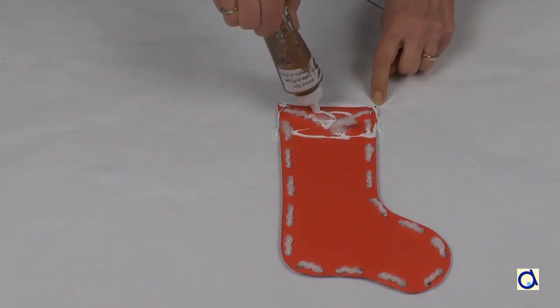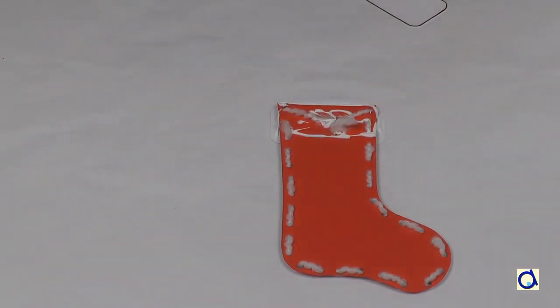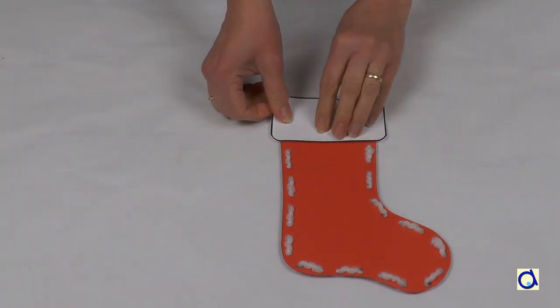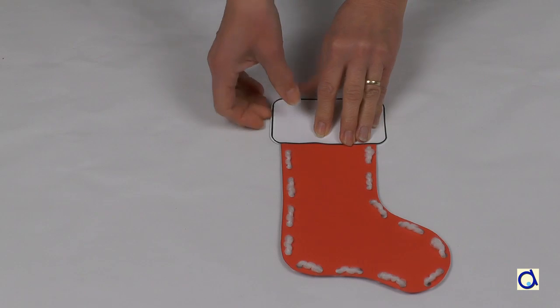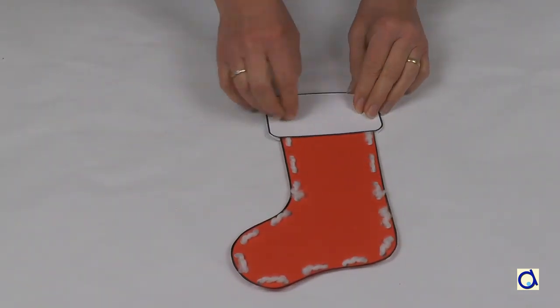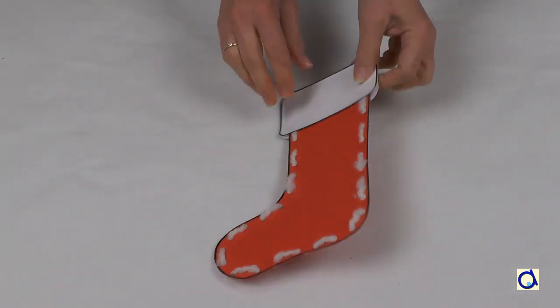Print it directly on the white construction paper and cut out two layers. Glue them on either side of the top edge of the stocking. Be careful not to close the opening of the stocking with glue.